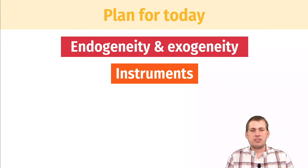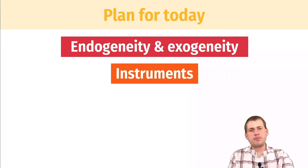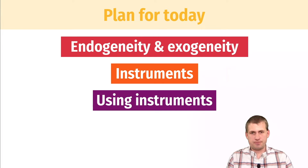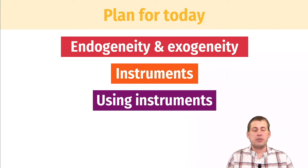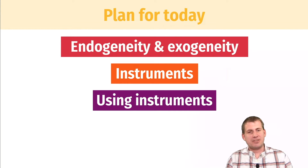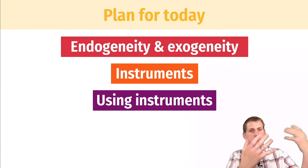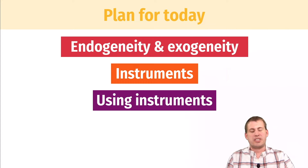Then we'll talk about what instruments actually are and the different qualifications to have a good instrument. Then we'll go through an example of using an instrument and doing something called two-stage least squares regression, where you use an instrument in the first stage of a regression model and then pull out information from that and use it in the second stage to make causal inference.